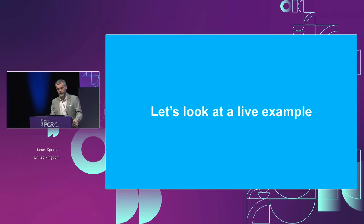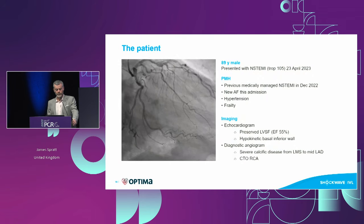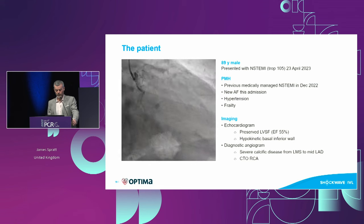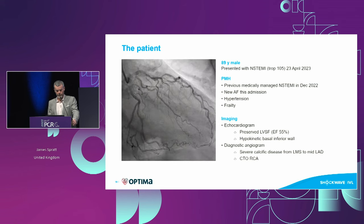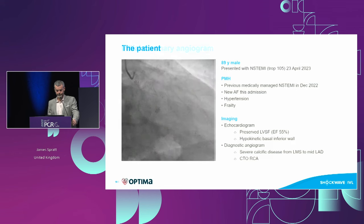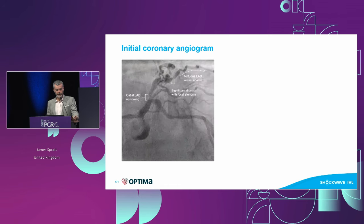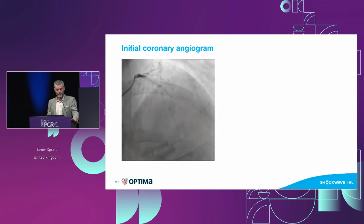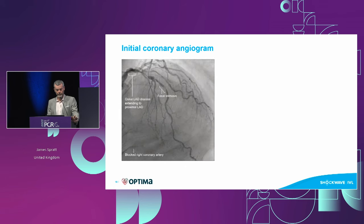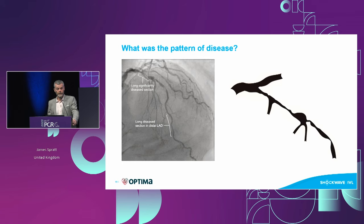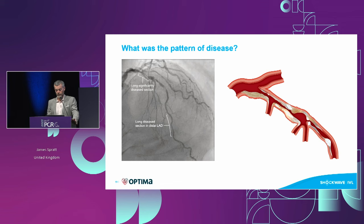Let's look at this within a live case example. An elderly gentleman presented with acute coronary syndrome with horrible coronary disease, previously medically managed, with a CTO of his right coronary artery. From the caudal view we can see osteal disease, significant distal disease, and a very tortuous vessel — that tortuosity might make you nervous about using rotational atherectomy. From the cranial perspective, again a very long section of disease with mixed morphology: eccentric, concentric, and nodular calcium.